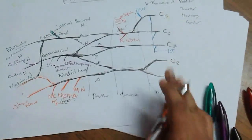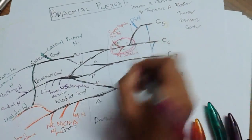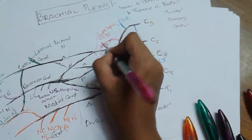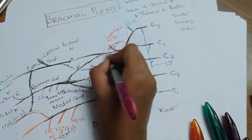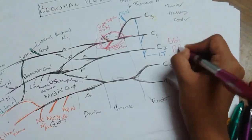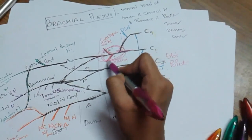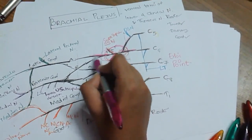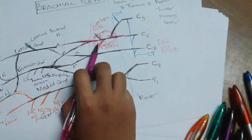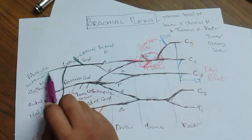This is the brachial plexus. Now for the clinical aspects: this is Erb's point. Erb's point is the meeting point of six nerves: the C5 root, C6 root, suprascapular nerve, nerve to subclavius, anterior division of upper cord, and posterior division of upper cord. Paralysis at Erb's point means all muscles supplied by these nerves are lost — part of the lateral cord is lost.